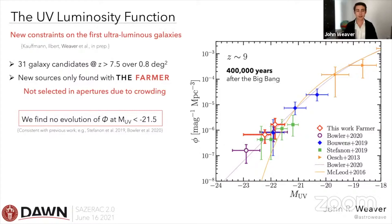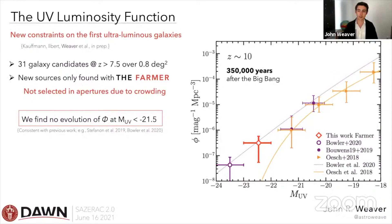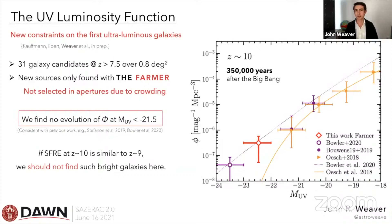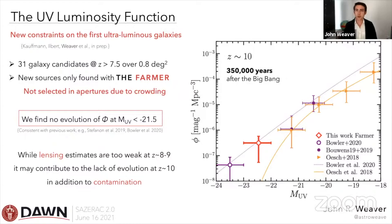We also find no evolution of the UV luminosity function normalization on the bright end, consistent with previous work. At redshift 10, the normalization doesn't change and we get basically the same number density of sources as at higher redshift. If the star formation rate efficiency at redshift 10 is similar to redshift 9, we really shouldn't find such bright galaxies — we'd want an increase in number density with time. Lensing estimates are too weak at redshift 8–9 to explain the overdensity, but at redshift 10, with only two sources formally in that bin, lensing and contamination may indeed contribute, and shot noise is prevalent.